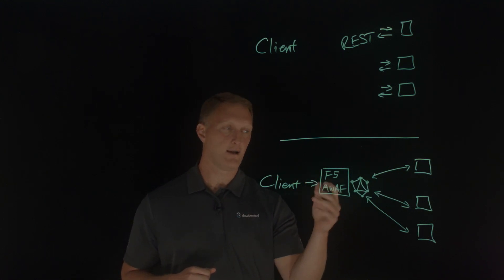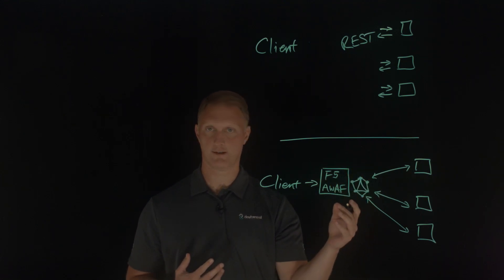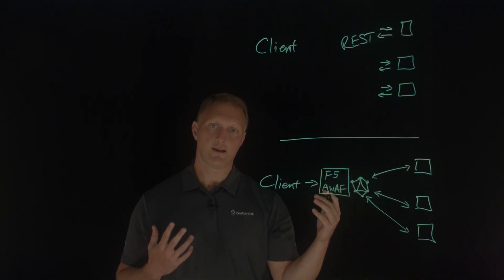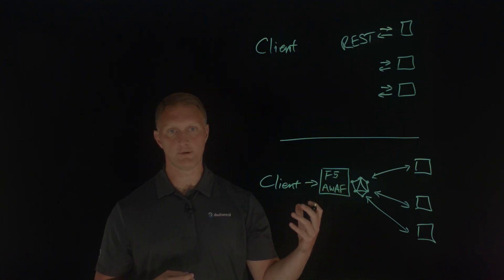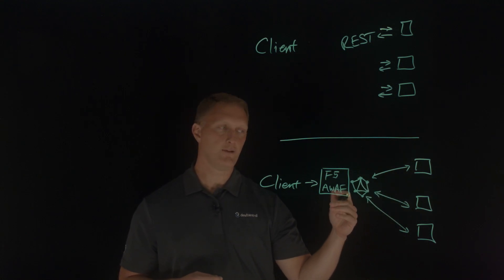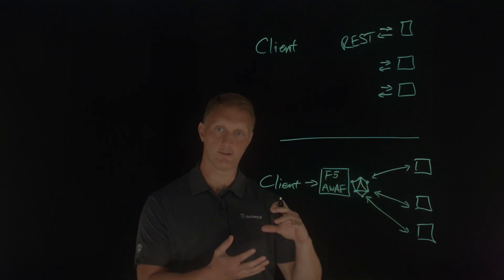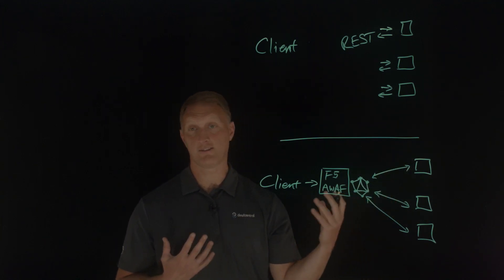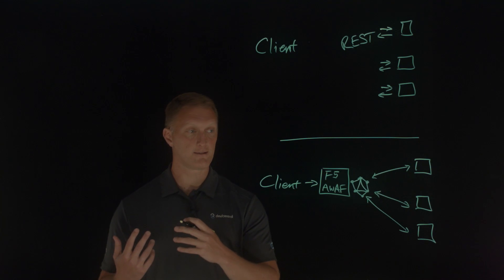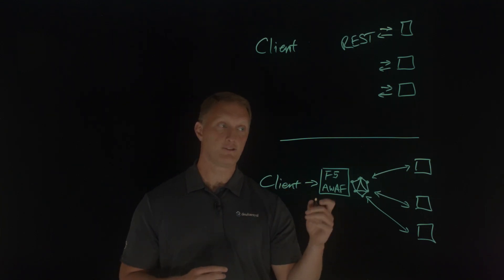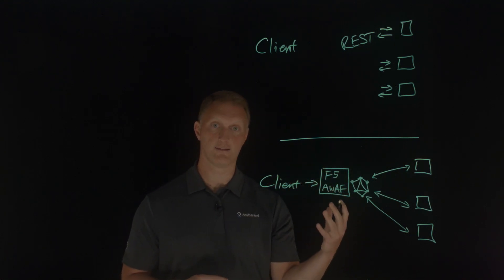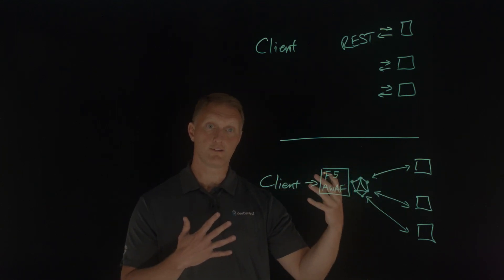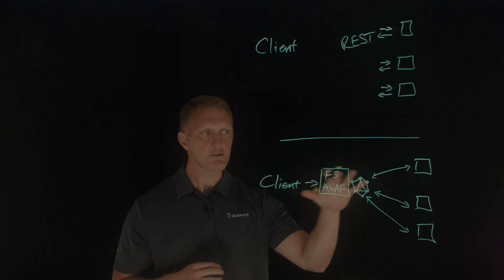Another important feature is introspection, which is unique to GraphQL. Introspection is the ability to query which resources are available in the current API schema — you can see the queries, types, fields, and directives that the API supports. It's a useful developer tool, but you wouldn't want it turned on in production. Advanced WAF enforces best practices for deploying GraphQL APIs by alerting you to disable introspection when needed.